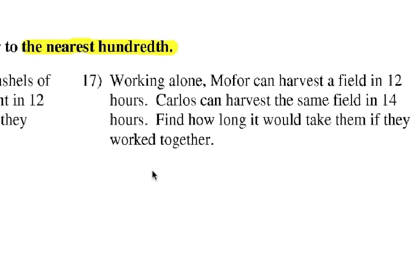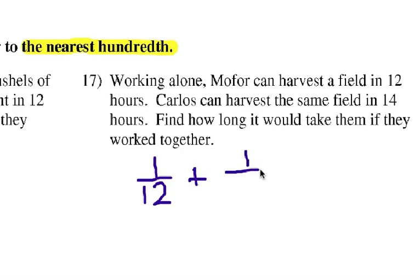The first person can do it by themselves in 12 hours, so that's going to be 1 over 12 — that's his or her part of the job. And then we're going to add it to the part that Carlos can do by himself, and that's going to be 1 over 14 hours. That's going to equal 1 over the total together — how long it would take them if they worked together — which we'll call 1 over x.